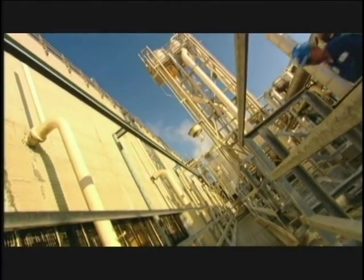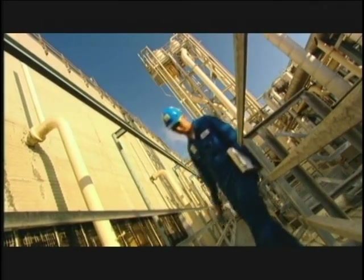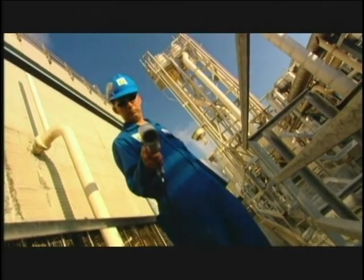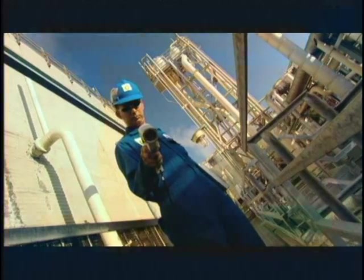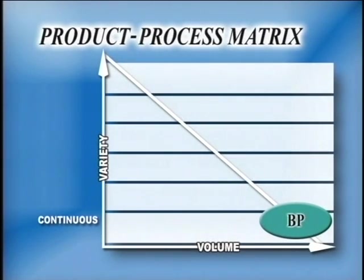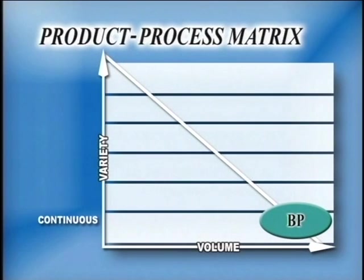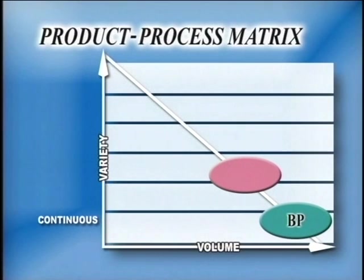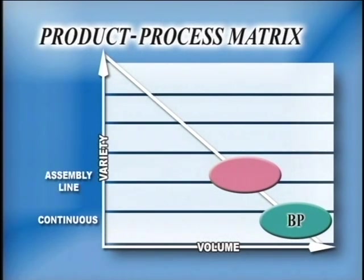The workers at the plant represent a wide range of specialized skills without much overlap. For a global petroleum producer like BP, continuous production is the most effective process choice. In many cases, though, consumers demand some degree of customization. In order to deliver a high volume of output and still offer some variety, manufacturers turn to a repetitive process called an assembly line.